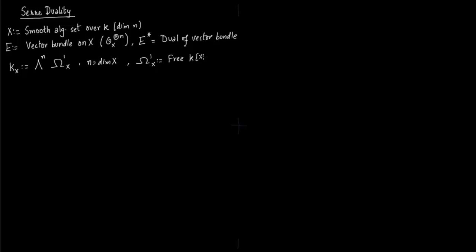And you recall that this ω1x is nothing but the free module k[x1, x2,...,xn] with bases dx1, dx2, dx3,...,dxn. And this ω1x looks like the direct sum of copies of k[x1 to xn]dxi. We have talked about this before.